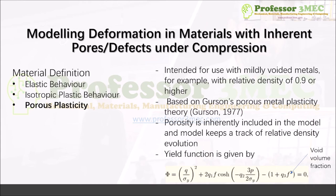This model is intended for mildly voided metals — you cannot use it for foams with a large number of voids. Relative density should ideally be around 0.9 or greater, though values of 0.8 or 0.7 have been used; check the literature to justify your selection. The theory is based on the analytical solution proposed by Gurson in his famous 1977 paper. Porosity is inherently included in the model, so you can track void volume fraction and relative density under both compression and tensile loading.